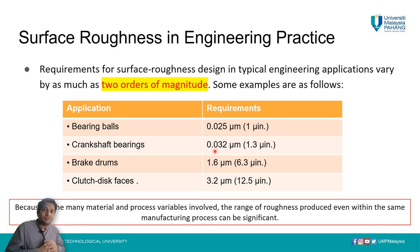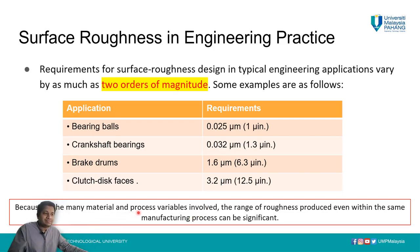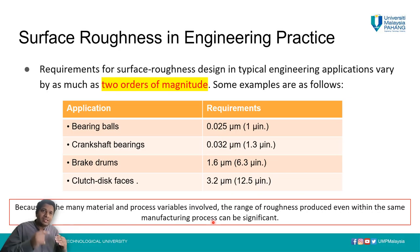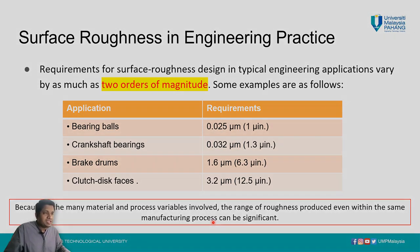For clutch disc plates, more holding power and more friction is needed, so a rougher surface is used. Because many material and process variables are involved, the range of surface roughness produced even within the same manufacturing process can be significant. It depends on cooling state, weather, and noise factors of the machining process. The same machine and product can produce variation in surface roughness when the environment or parameters change.